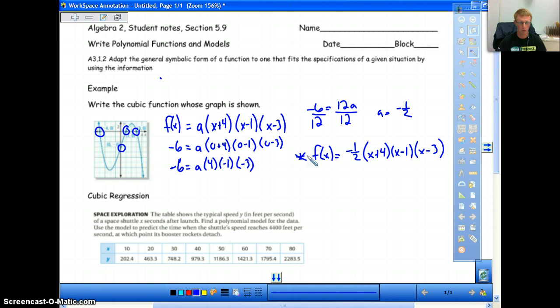So that's all you have to do for those ones. Once you're given a graph and you know what your x-intercepts are, you're just going to write your factors out. Then to figure out what your a is out front, you take one other point, plug it in, and solve for your a. So hopefully that's pretty easy.